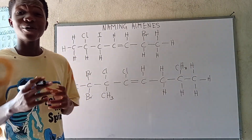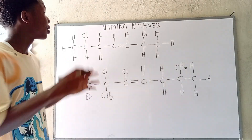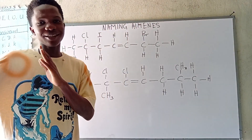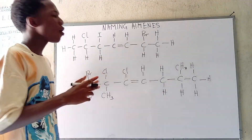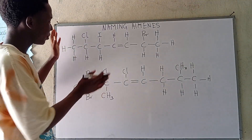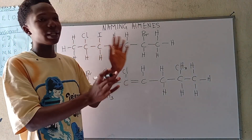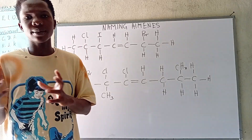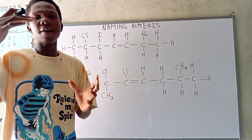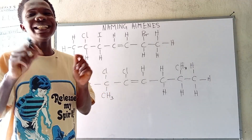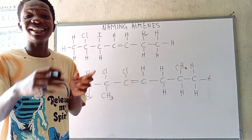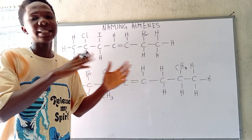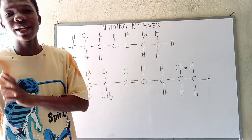Welcome. Today we are going to be learning how to name our alkenes. Just focus on me. From these two examples we can see they actually look almost the same but they are in different categories. We are going to be looking at geometric isomerism, and after that there is something called E/Z nomenclature — E and Z nomenclature. The same way we have cis and trans, we also have E/Z nomenclature.